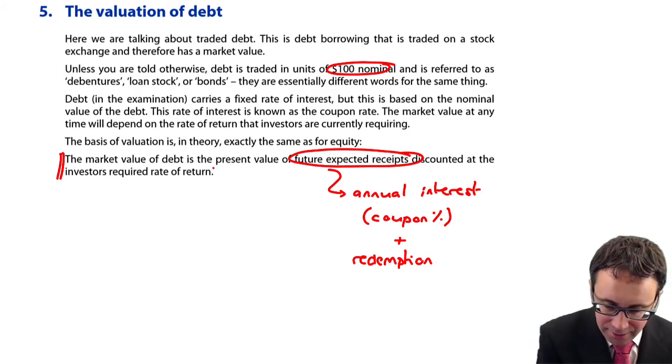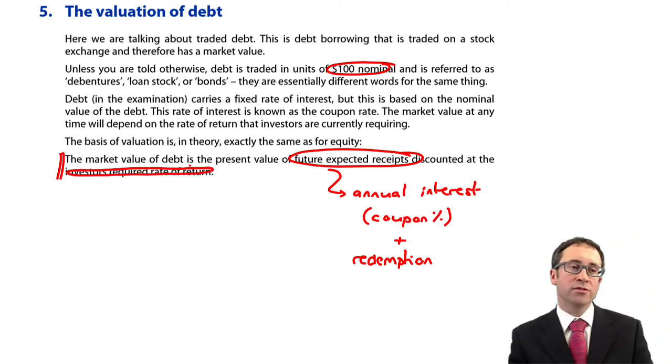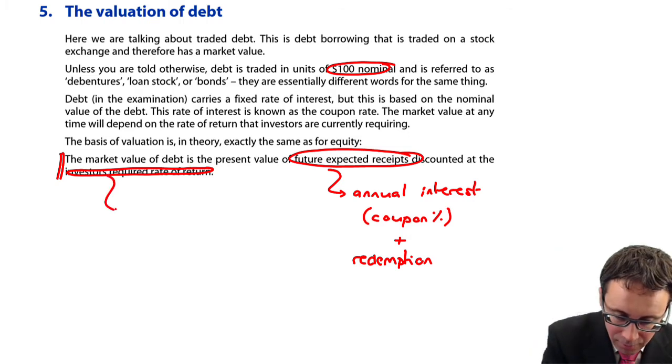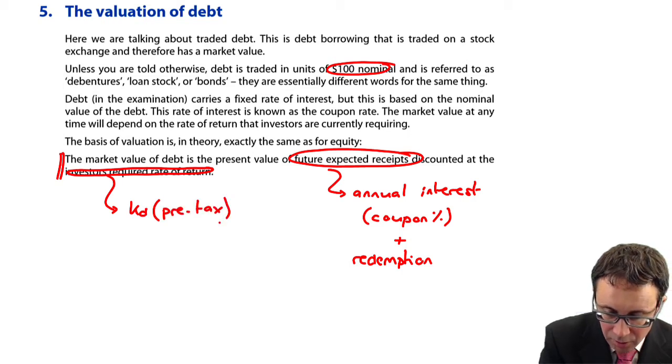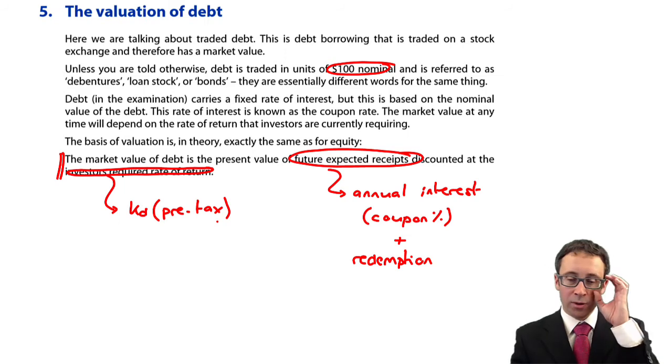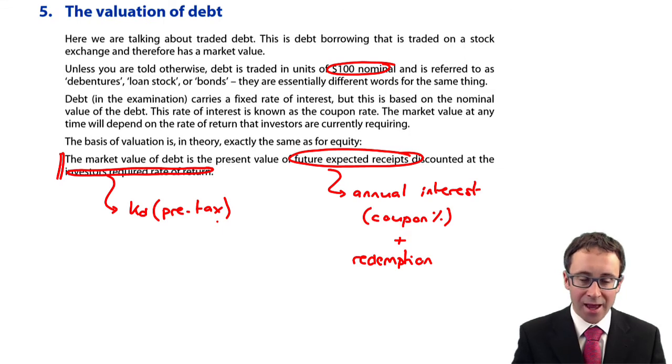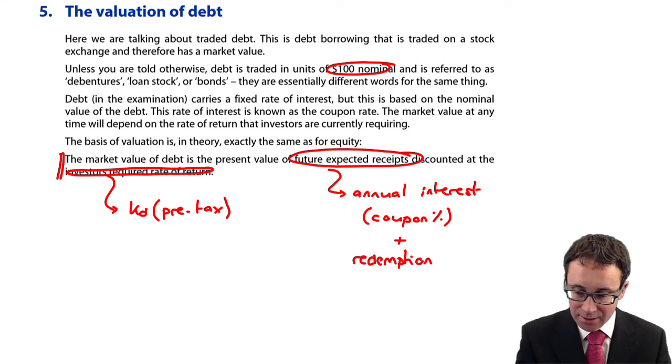When you're doing the discounting, that's at the investor's required rate of return. That is KD, the cost of debt, but just be careful. As we're looking at the market value for the debt holders, we're looking at everything pre-tax. Let's go through and have a play around with the various bits and pieces.